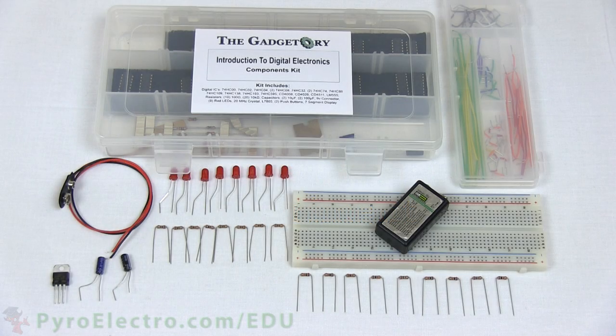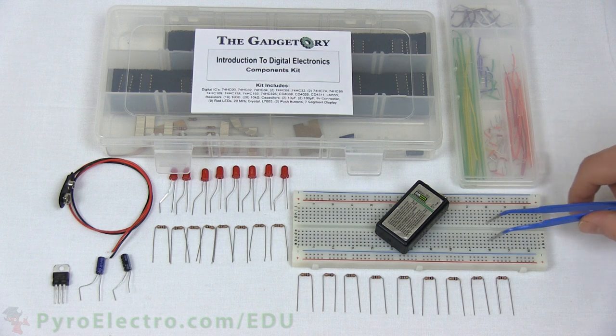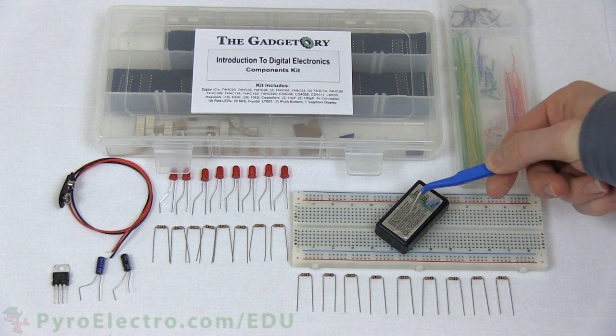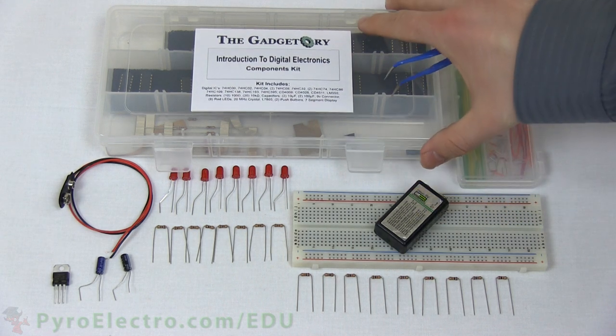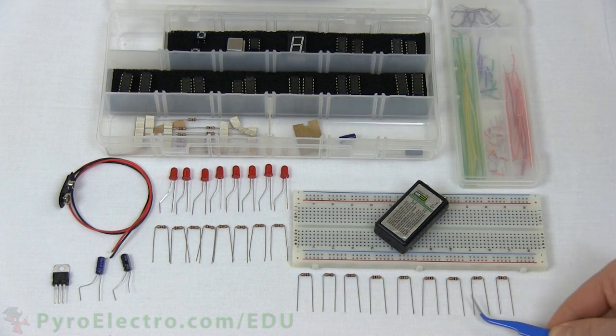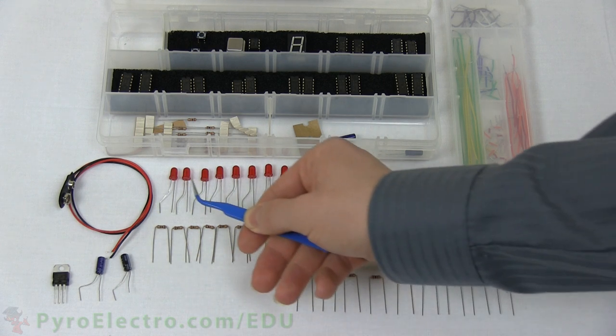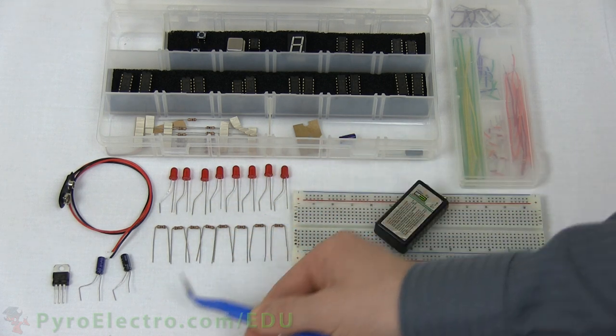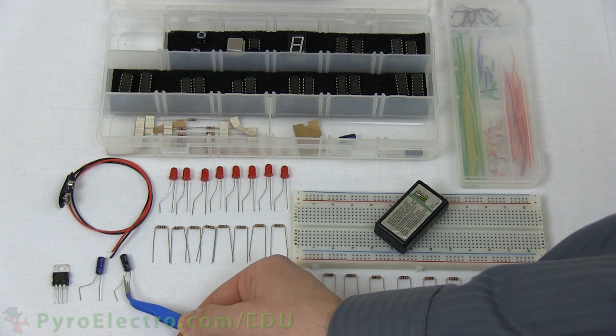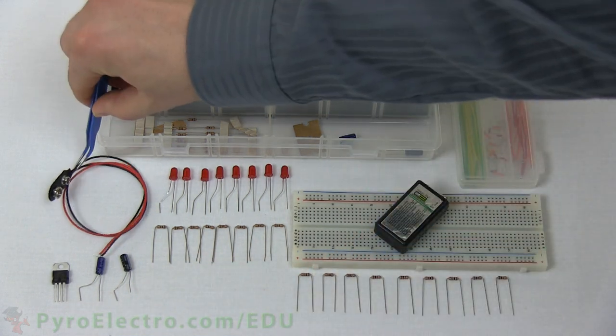So let's look at the parts necessary to build this. We'll need our jumper wire kit, a breadboard, 9-volt battery, and from the components kit: 9-10 kilohm resistors, 8-100 ohm resistors, 8 red LEDs, a 10 and 100 microfarad capacitor, a 7805 5-volt regulator, a 9-volt battery connector.